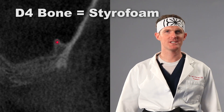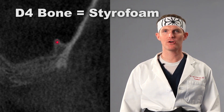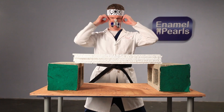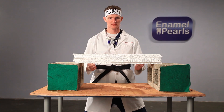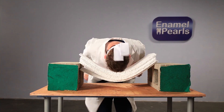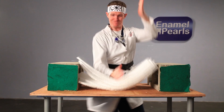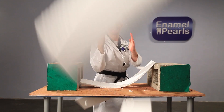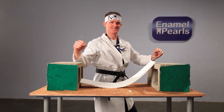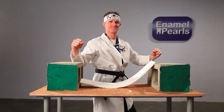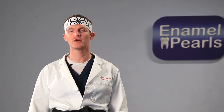D4 bone is like styrofoam. There is mostly marrow space and loose trabecular bone. This softest of bone is found in the posterior maxilla, especially under long-standing pontics, where the bone hasn't been stimulated for a long time. In D4 bone, the implant preparation is underprepared to condense the bone at placement. Implants in D4 bone are often left to heal covered, since they're not rigidly fixated at the time of placement.